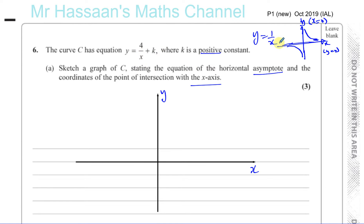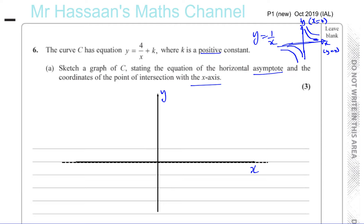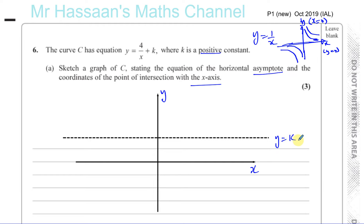Now, y equals 4 over x plus k. The 4 over x part means it's just slightly further out. The plus k means the horizontal asymptote — all the y values — you have to add k to them. Whatever k is, it's a positive constant, so it's going to be going upwards by k units. So the horizontal asymptote will also go up by k units, meaning y equals k is going to be the horizontal asymptote.